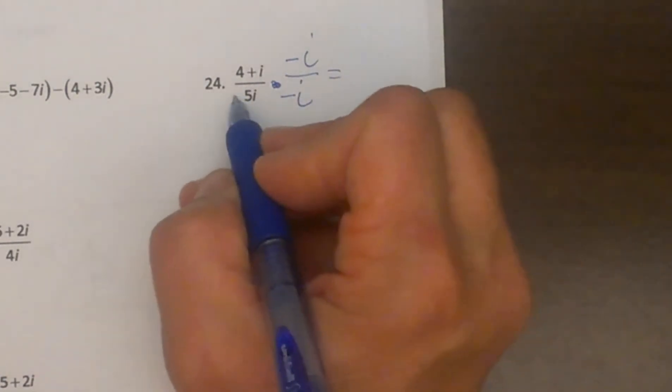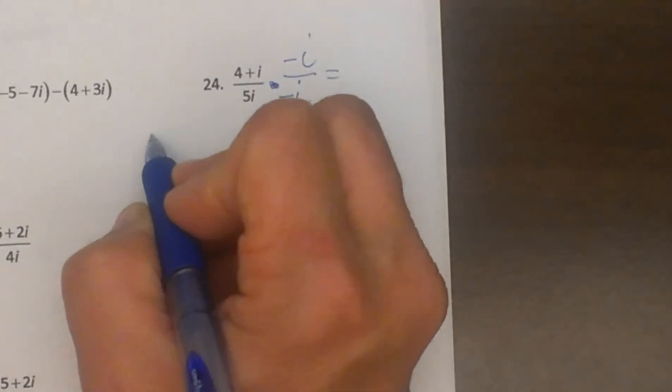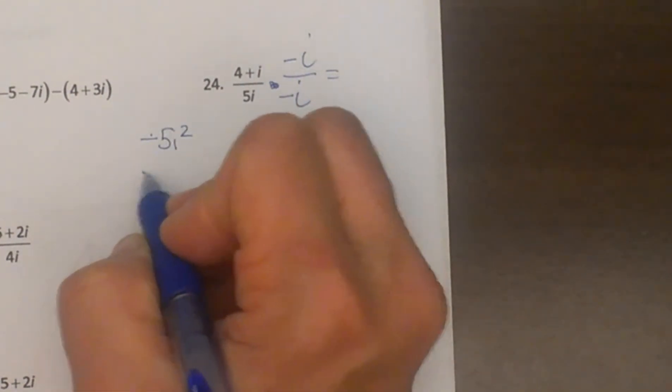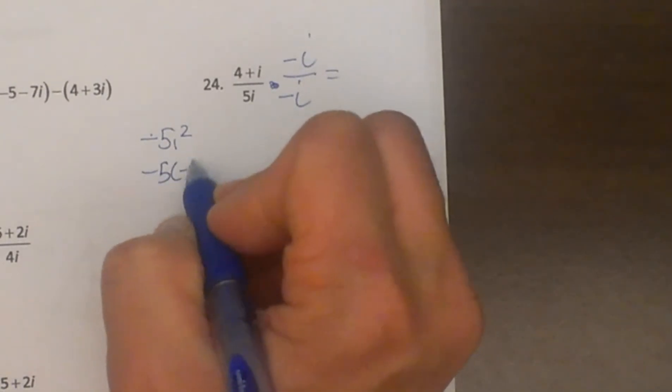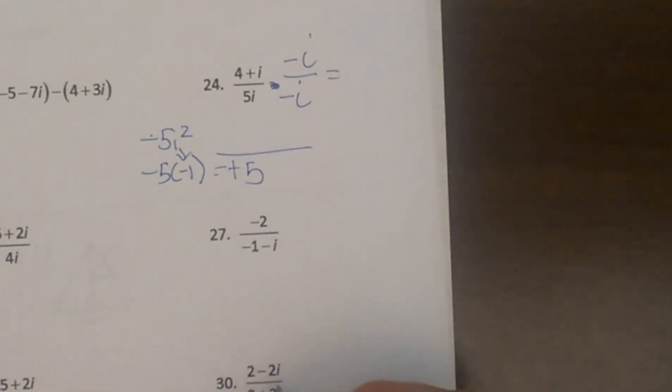So when I multiply the bottom or the denominator, I am going to get negative 5i squared. Well, we know that i squared is equal to negative 1, so I am going to replace i squared with negative 1, so I am ending up with a positive 5 in my denominator.